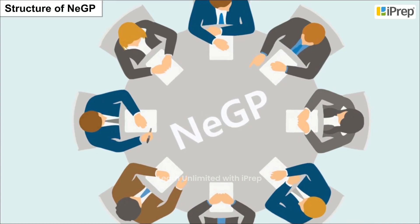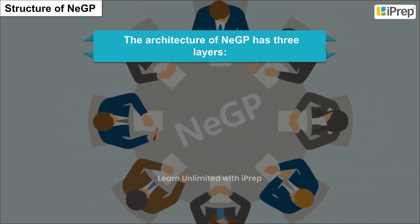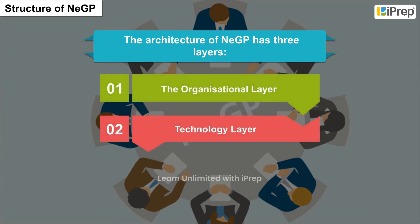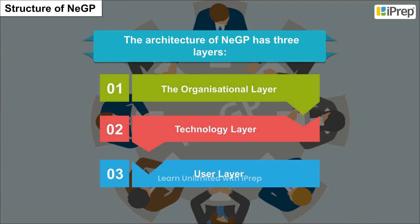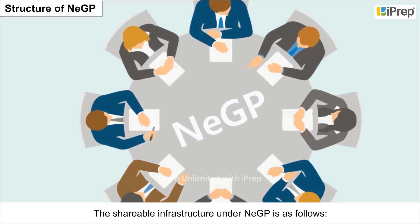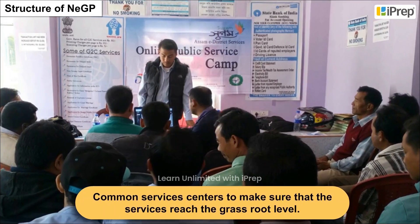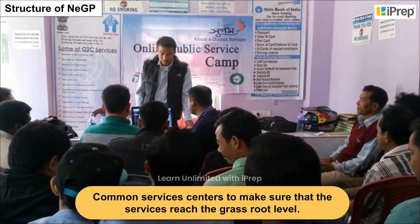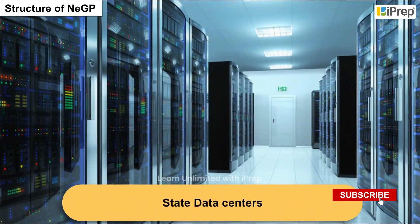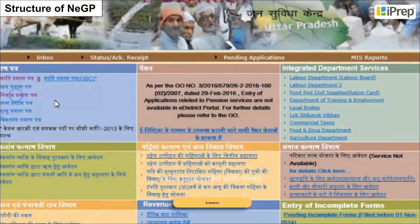Structure of NEGP. The architecture of NEGP has three layers: the organizational layer, technology layer, and user layer. The shareable infrastructure under NEGP includes common services centers to ensure services reach the grassroot level, statewide area networks, state data centers, state service delivery gateway, and e-district.